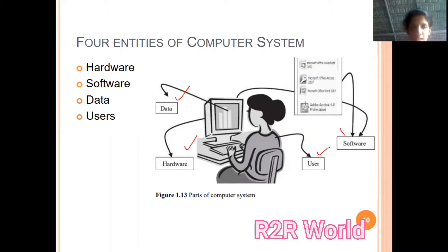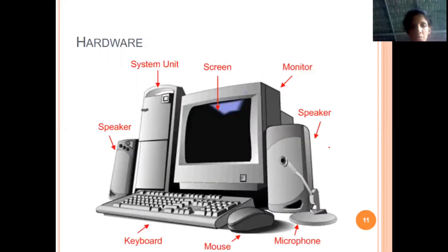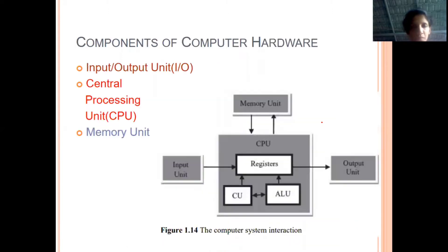We will see hardware. These are the major hardware components of the system like the screen, system unit, speaker, monitor, keyboard, mouse, microphone, etc. These are the different hardware components of the computer system. The different components of computer hardware can be categorized into input and output unit, central processing unit, and memory unit. The CPU is composed of two things: the ALU and the control unit, as you can see in this diagram.